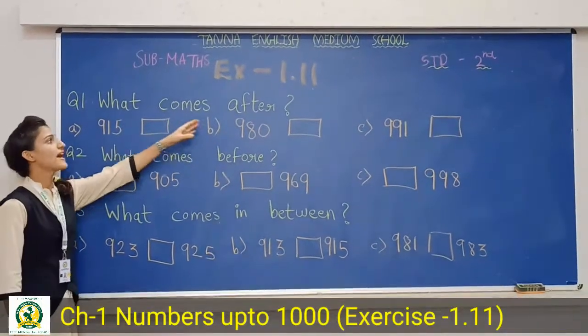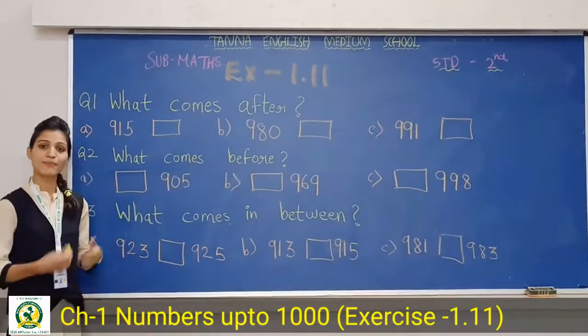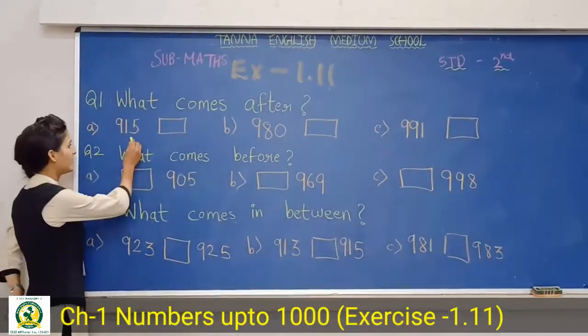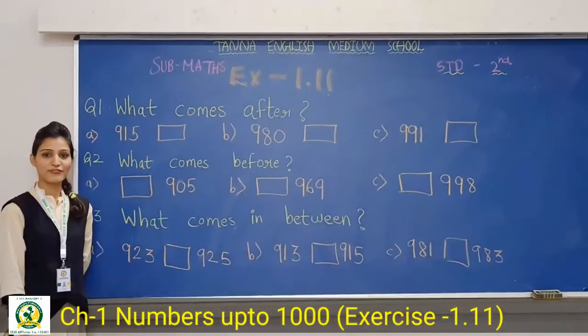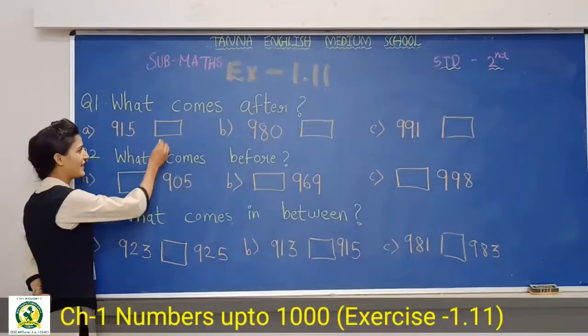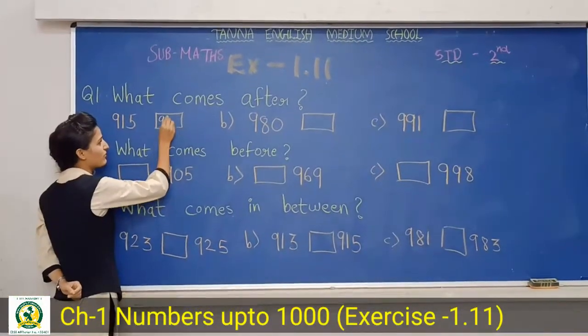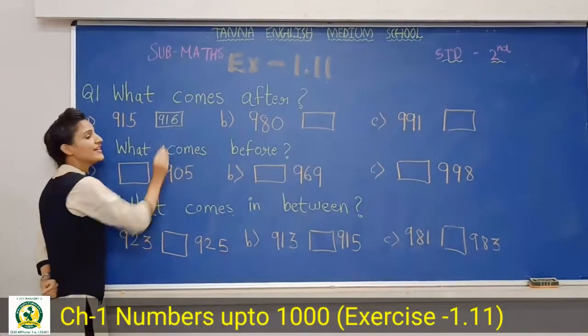First one is what comes after? After means the next number. So first one is nine hundred and fifteen. So students, what comes after nine hundred and fifteen? Right, nine hundred and sixteen. So you have to write here 916, okay?